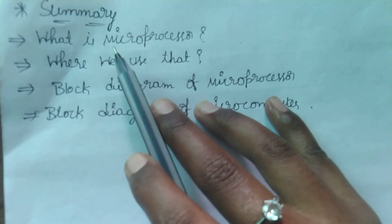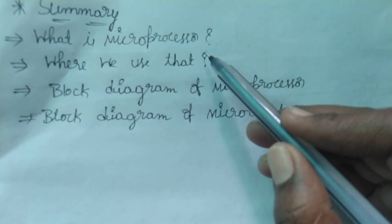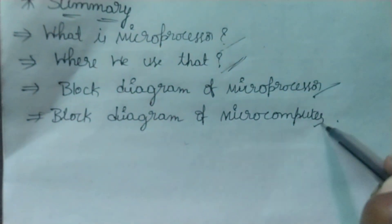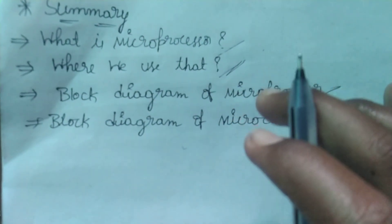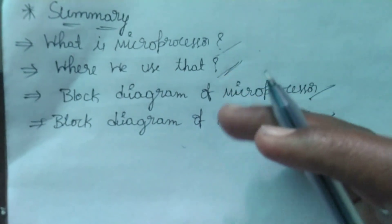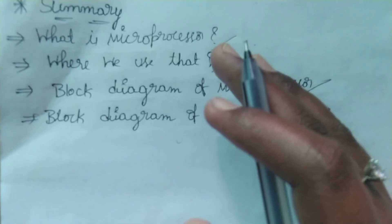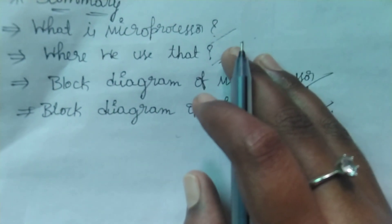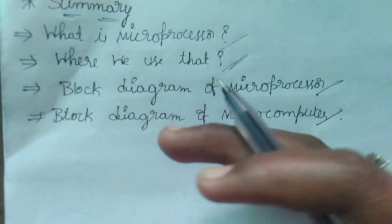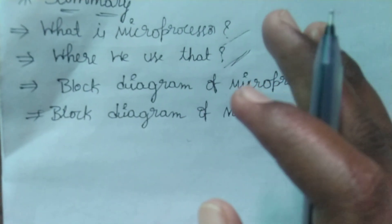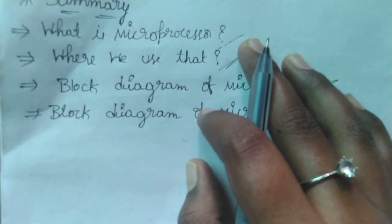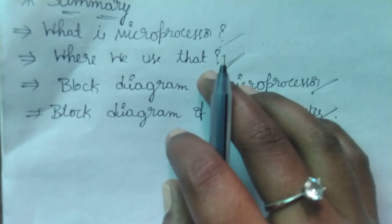Today's summary: first, we learned about what is microprocessor and where we use it — in microcomputers. We also covered the block diagram of microprocessor and block diagram of microcomputer. In the next lecture, we will discuss what is microcontroller and the difference between microprocessor and microcontroller. If you like this video, please subscribe to my channel and click the bell icon to get more notifications. Thank you.